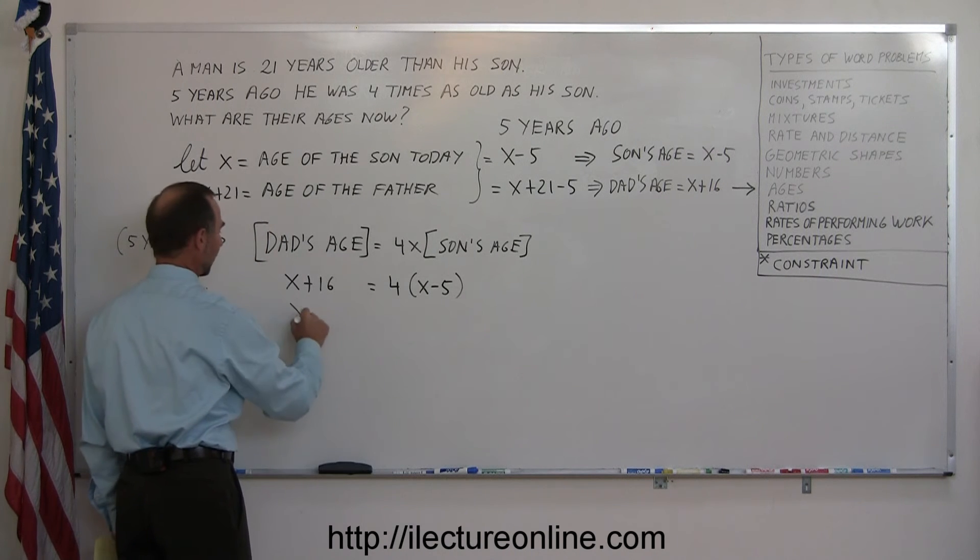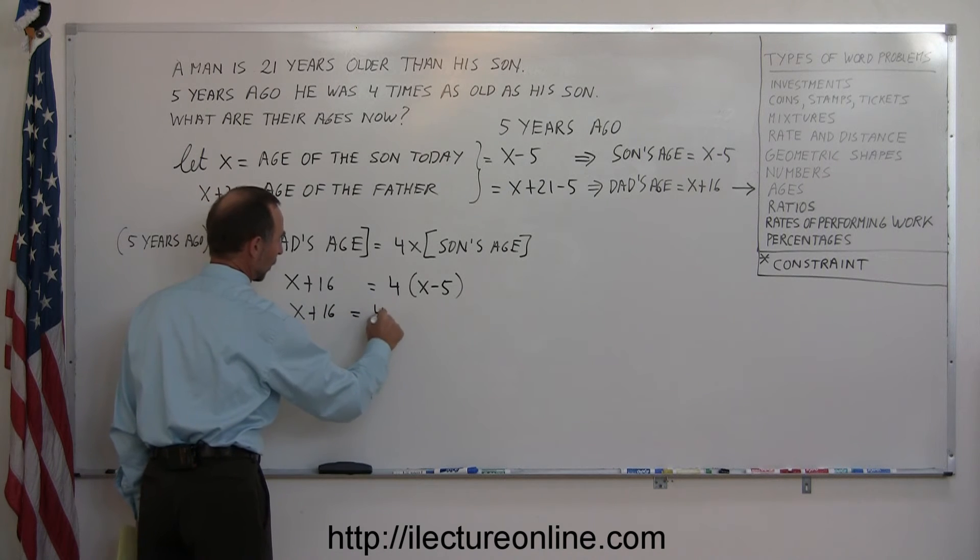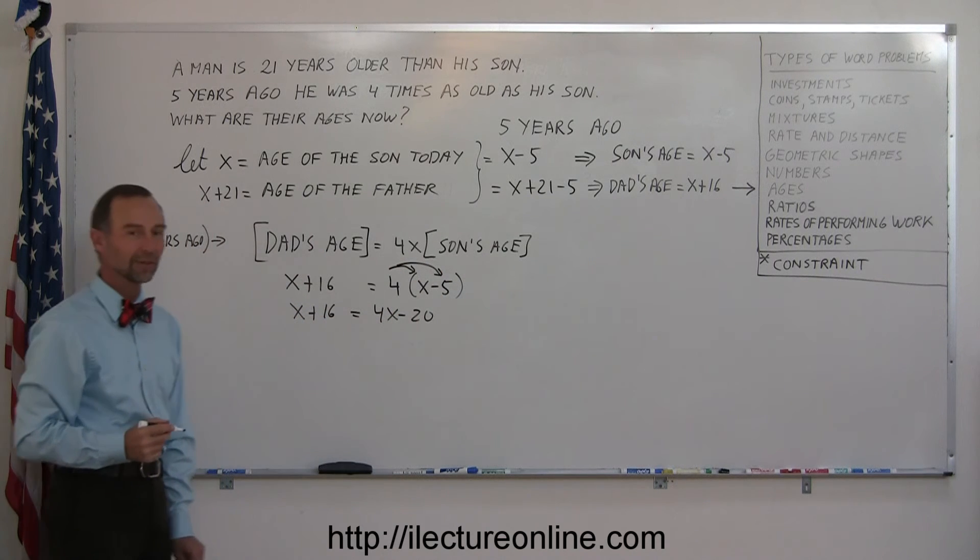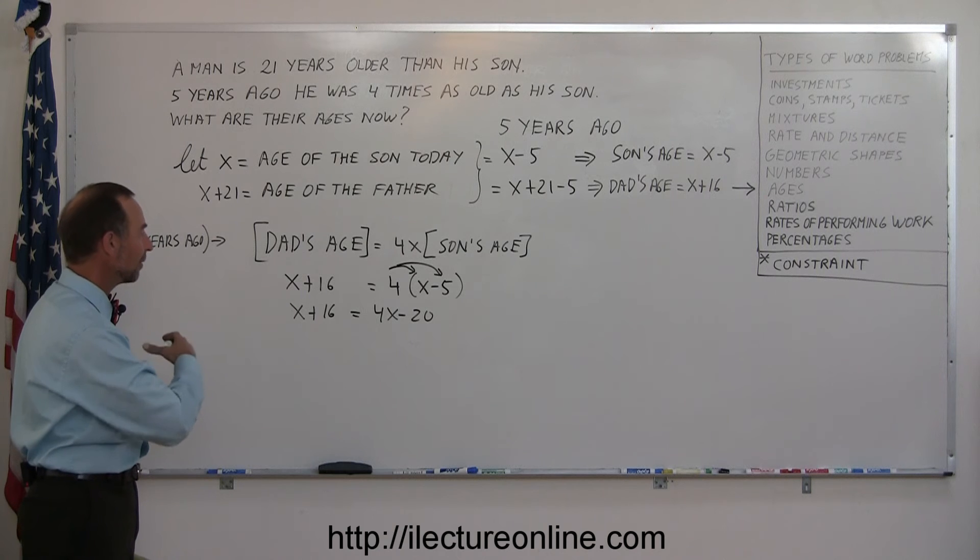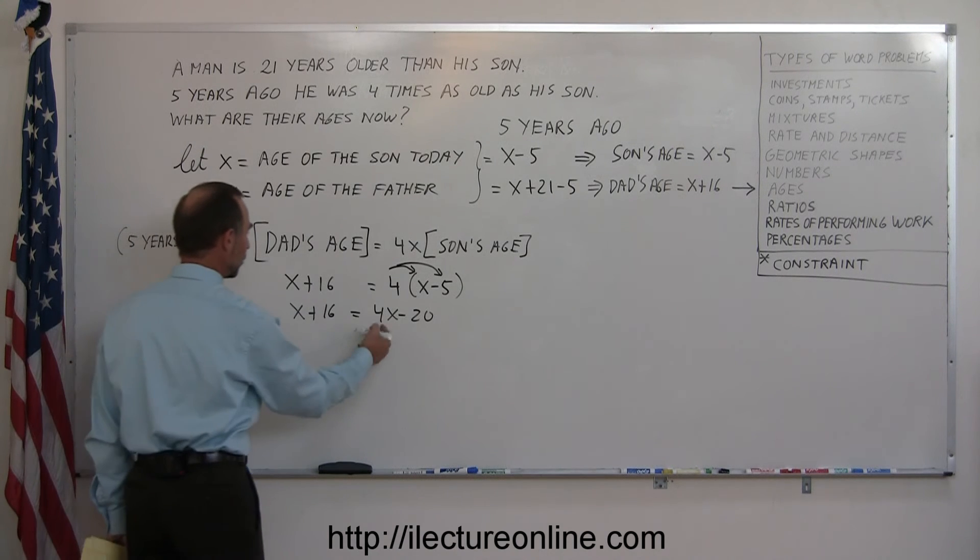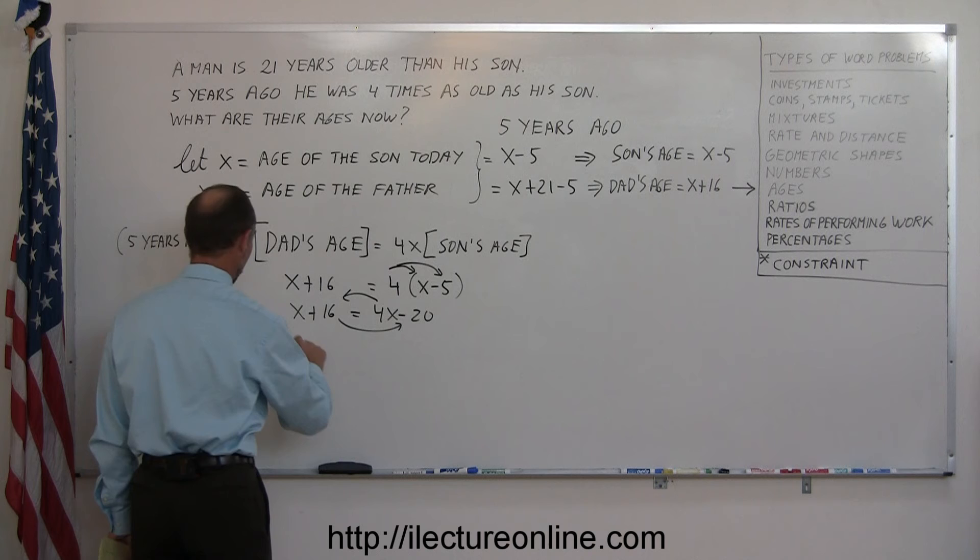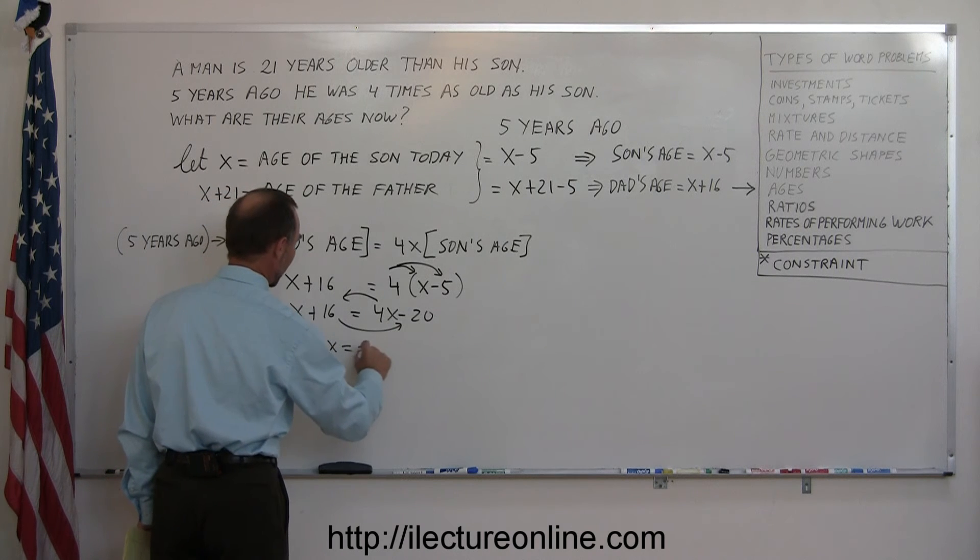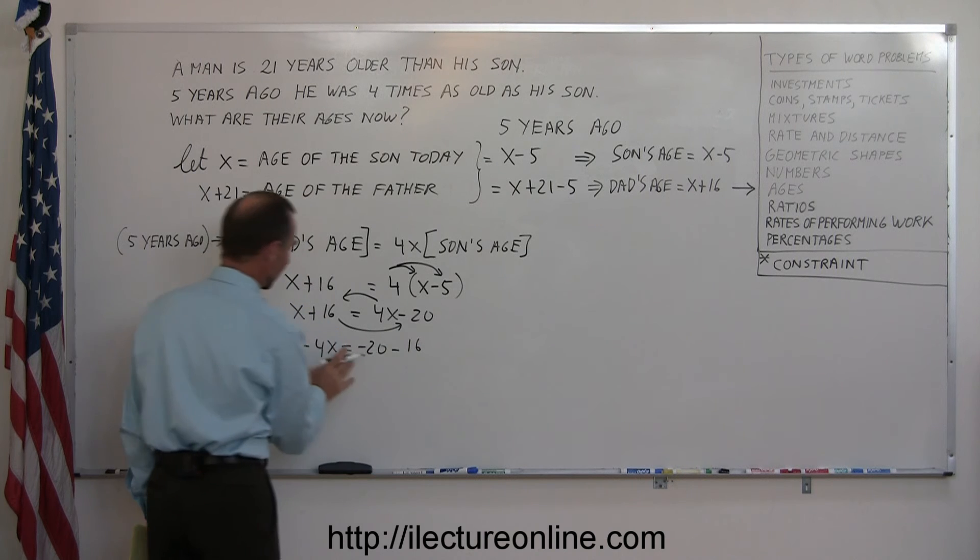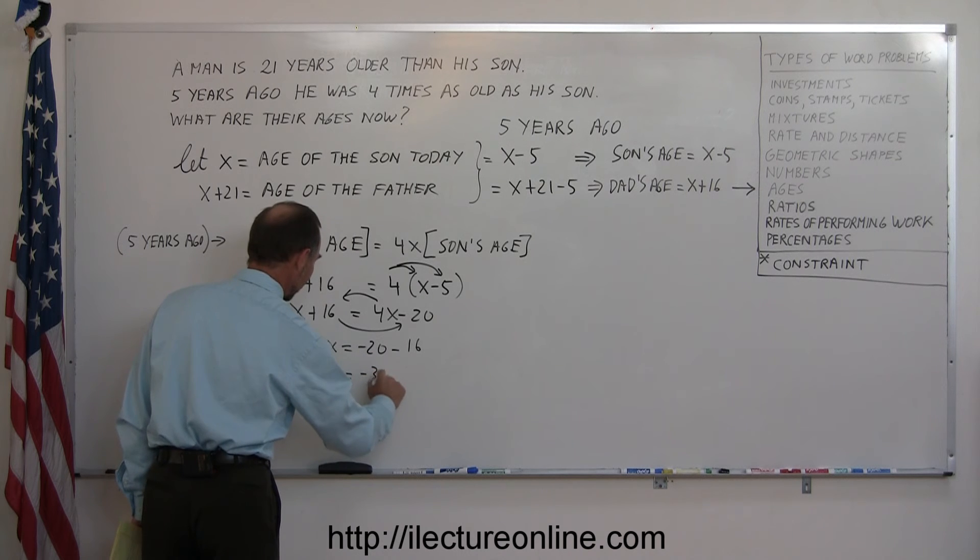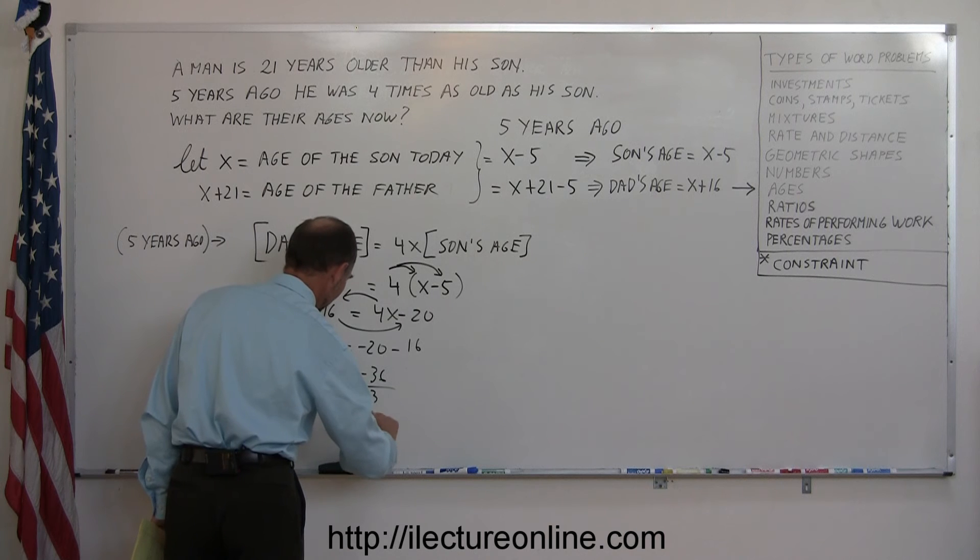First thing, we want to get rid of the parentheses. So we have x plus 16 equals 4x minus 20. Remember, we distribute the four over both terms inside the parentheses. Now we move all the variables to one side, all the numbers to the other side. So moving the 4x over here and the 16 that way. And remember, when we cross the equal sign, we want to change the sign. So we have x minus 4x equals minus 20 minus 16. Combine like terms on both sides of the equation. So minus 3x equals minus 36. Divide both sides by negative 3. And we get x equals positive 12.